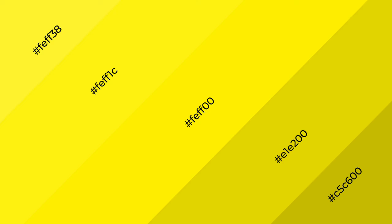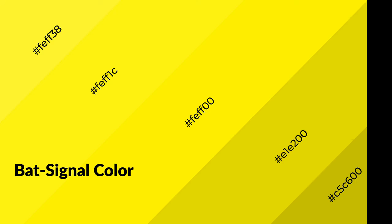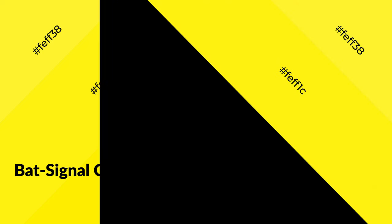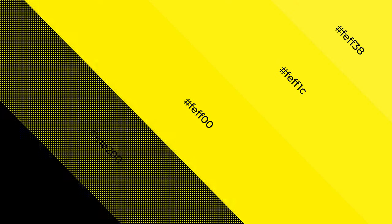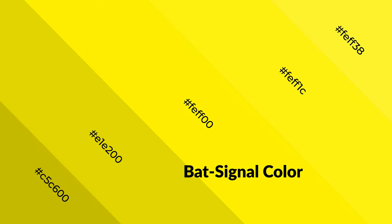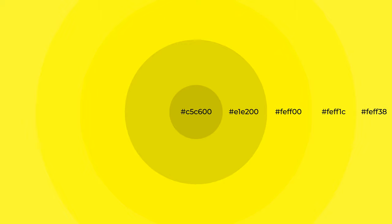Bat signal is a warm color and it emits cozier and active emotions. Warm colors are symbols of warmth, fire, heat, and sunshine. It also evokes joy, passion, love, and even anger. You can see them used in restaurants and gyms.